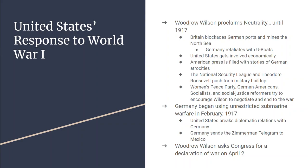In May of 1915, a ship called the Lusitania is sunk. There are over 1,200 passengers on the ship, including about 130 Americans, but the ship was secretly carrying ammunition — it was perfectly okay for Germany to target it. The American public had no idea there was ammunition on the ship, and when the Lusitania was sunk, it didn't go over well with America.